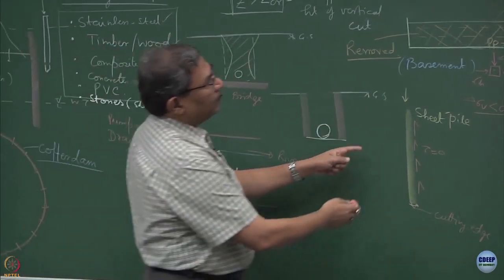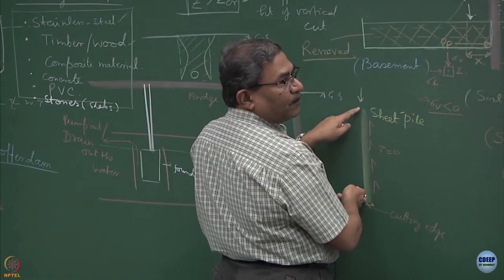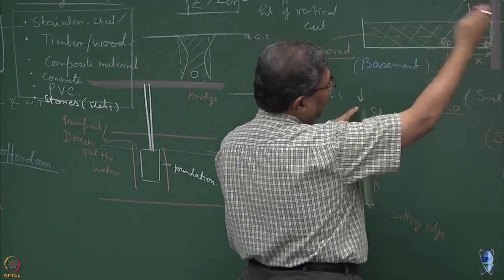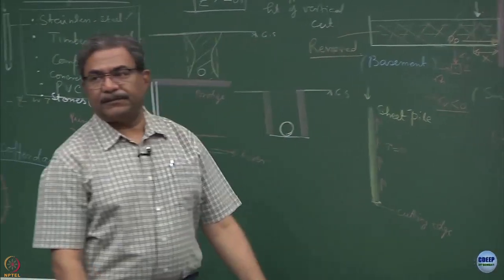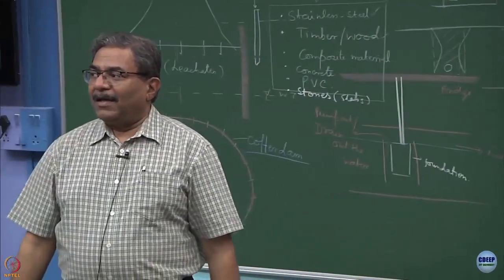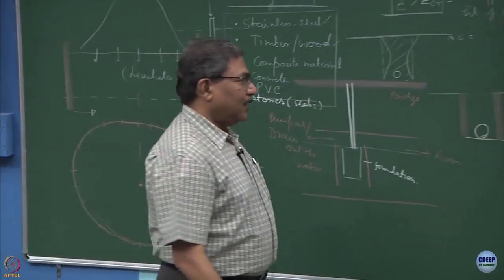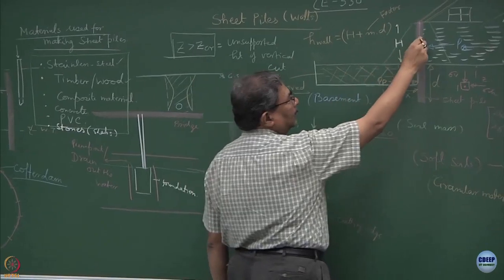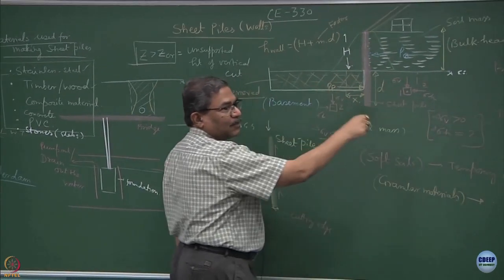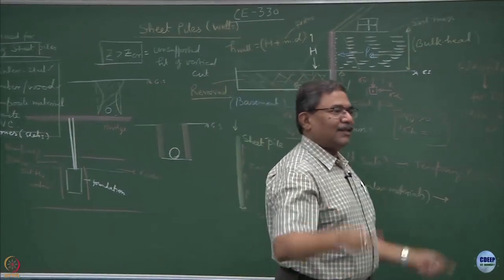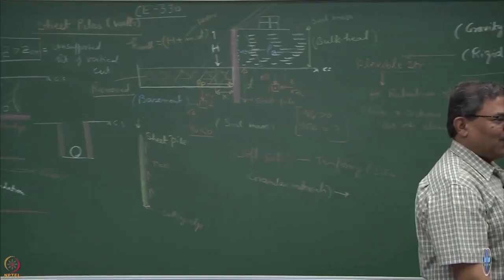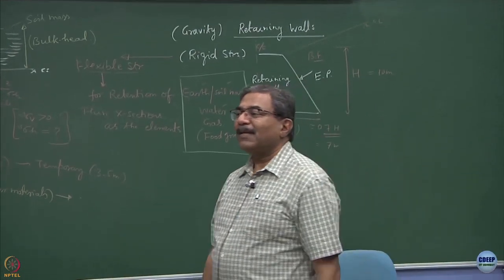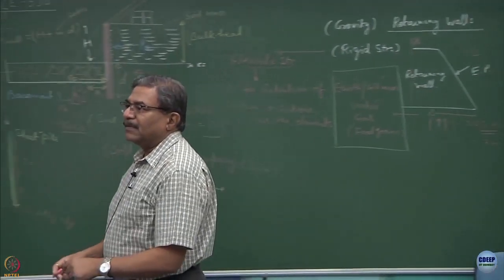So, this system which is a flexible system goes into the ground or remains outside and gives you the advantage. The paradox is though the element is flexible, we assume the system which gets created because of the sheet pile is a rigid system, rigid body. So, we apply the concept of rigid body to analyze it, approximations.